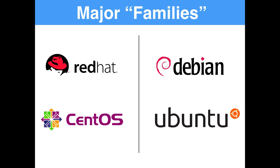Debian is actually completely open source — it's not like an enterprise level of Ubuntu. Ubuntu does have more paid services than Debian, but both are really free to use. Ubuntu is just downstream of Debian. Debian is a little bit more stable than Ubuntu, while Ubuntu typically has the latest software and is the most popular Linux operating system out there for both desktop and server.